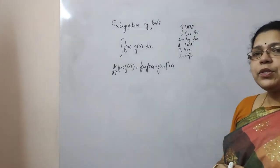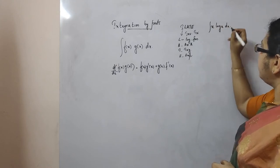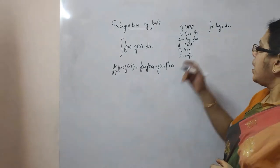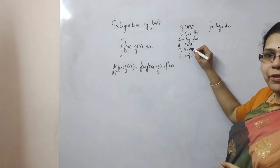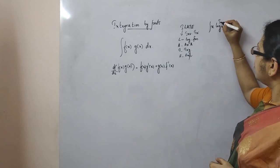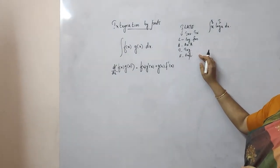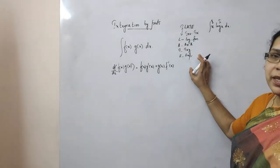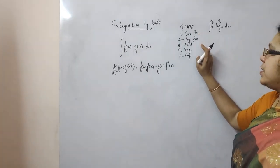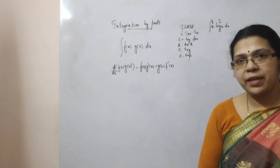Suppose you are going to integrate x·log(x). The question is which function to choose as the first function. X falls under arithmetic function, and log(x) falls under logarithmic function. According to ILATE, logarithmic function comes first, so log(x) is the first function and x is the second function. Similarly, if you had a trigonometric and an exponential function, take trigonometric as the first. If you had an inverse trigonometric and a trigonometric function, take inverse trigonometric as the first. According to this hierarchy, we select the first and second function.